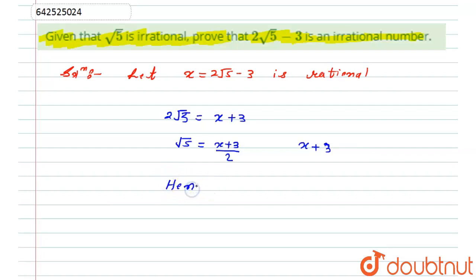the given thing, that is 2√5 - 3, must be an irrational number. So here